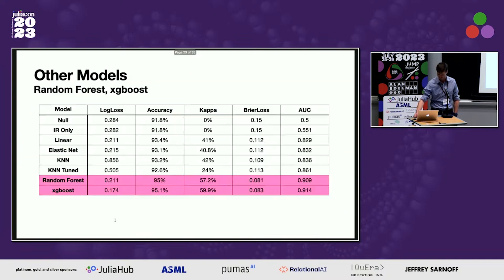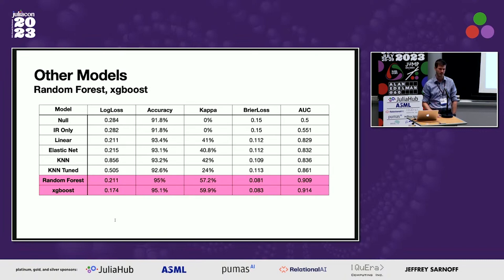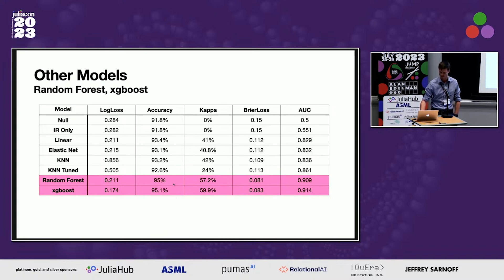Random forest and XGBoost models are fitted in exactly the same way — loading the packages, tuning hyperparameters, and evaluating through the same MLJ framework, because someone has already done the hard work of writing the interfaces. Most importantly, this is where we start getting good accuracies: 95%, much better than the null model. Log losses and Brier losses are also much lower. This is where we should proceed.